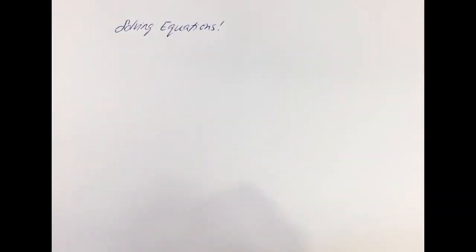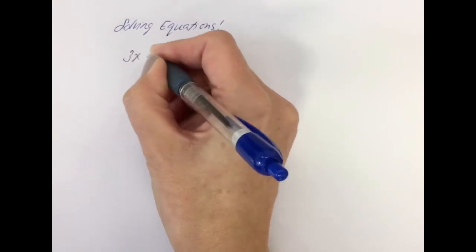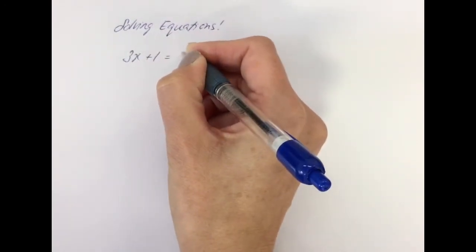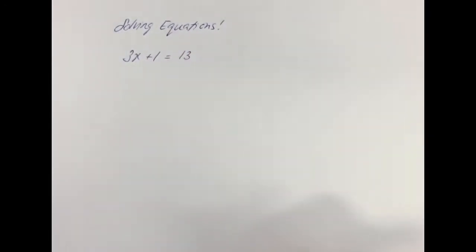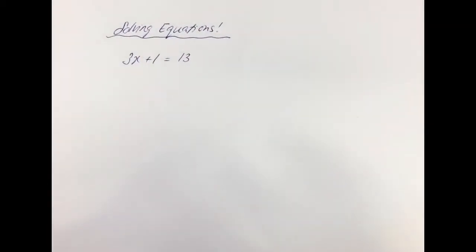In this video we're going to look at a revision of solving equations. Let's start off with a simple linear equation like this: 3x plus 1 equals 13. Just to make sure we're going through the method — although you might spot the answer quite easily — the method and procedure is really important so that when they get harder we will be able to follow the same approach, especially when we can't just spot what the answer is.